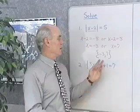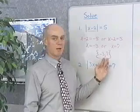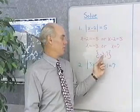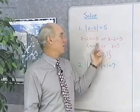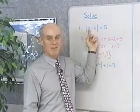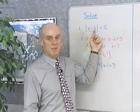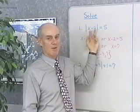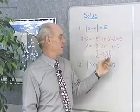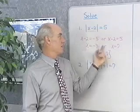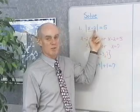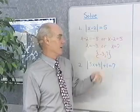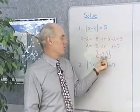Either of these two numbers, if I replace x with them, gives me a true statement. If I put in negative 3 for x, I have negative 3 minus 2, which is negative 5, the absolute value of which is 5. If I put in 7, I have 7 minus 2, which is 5, the absolute value of which is 5. So, two solutions.